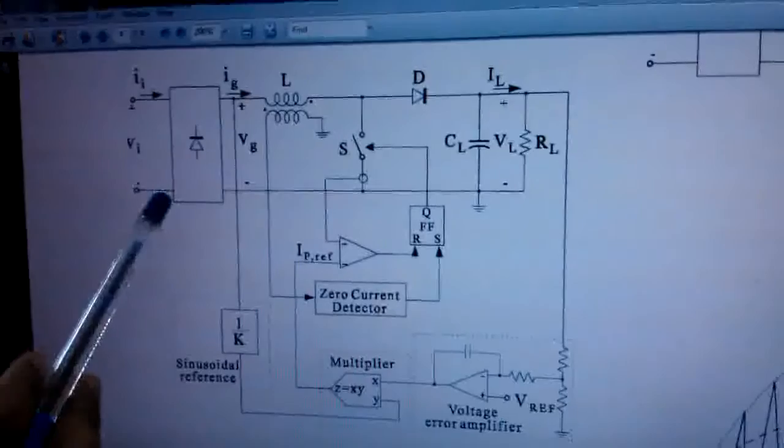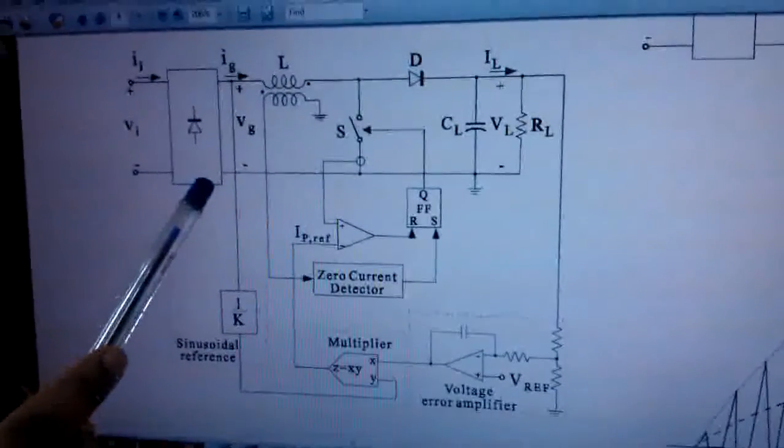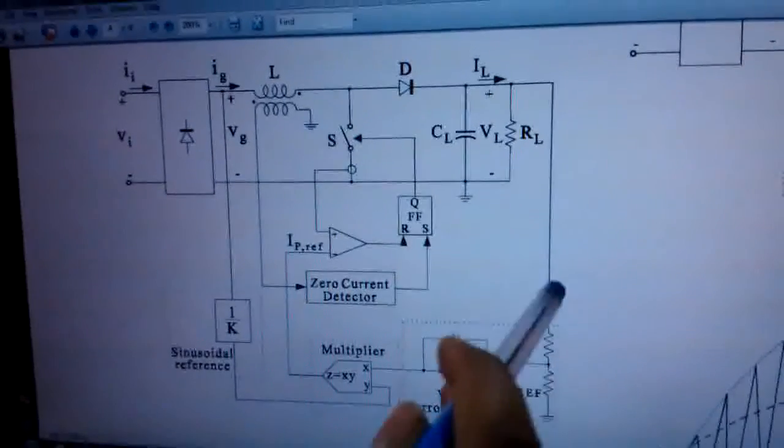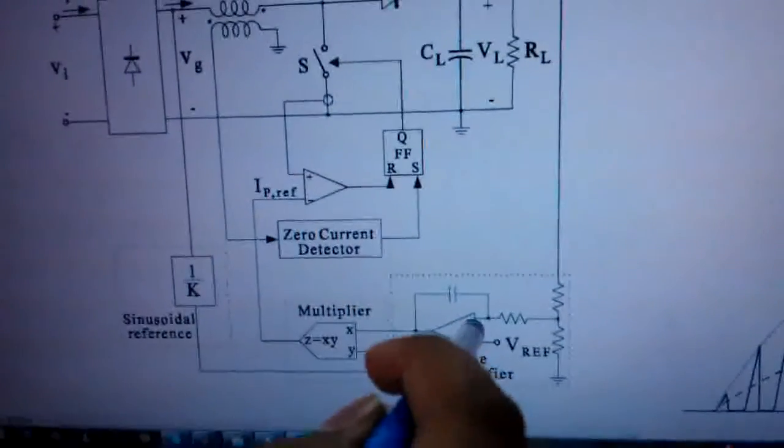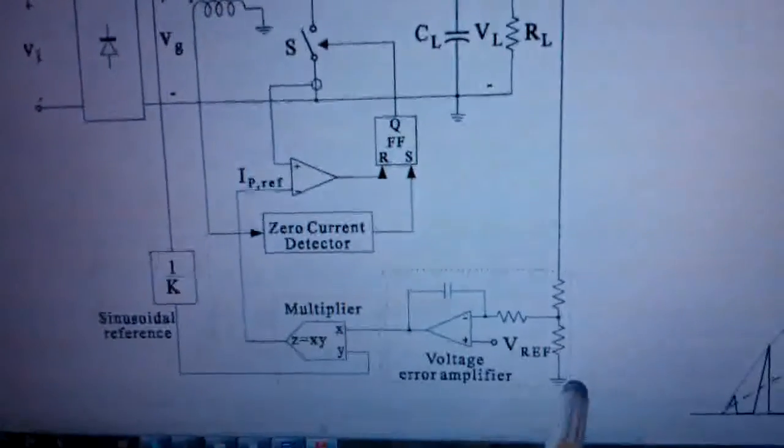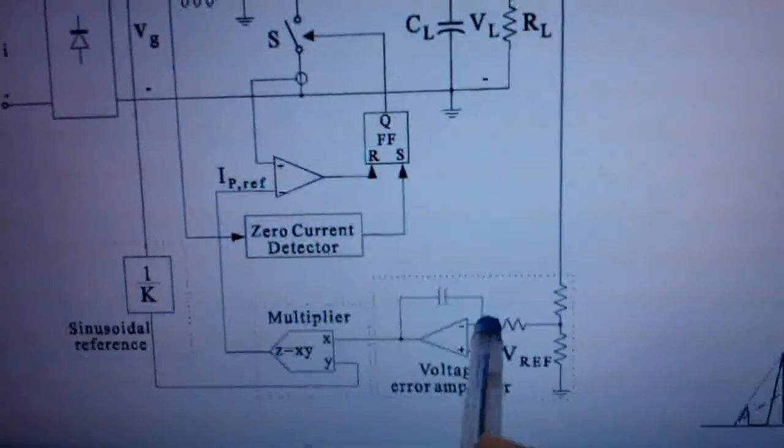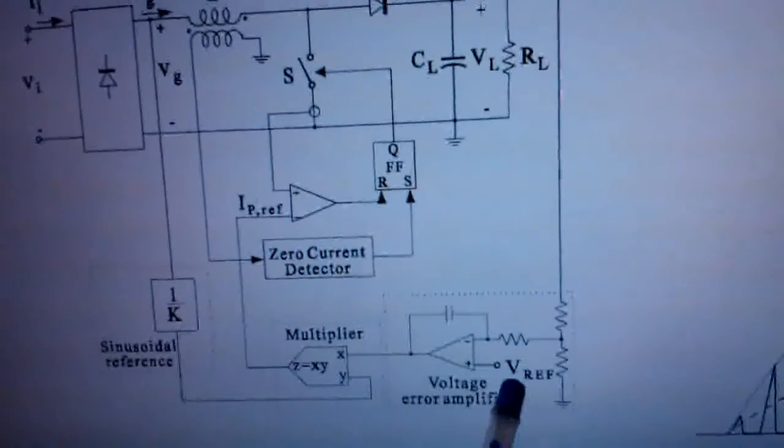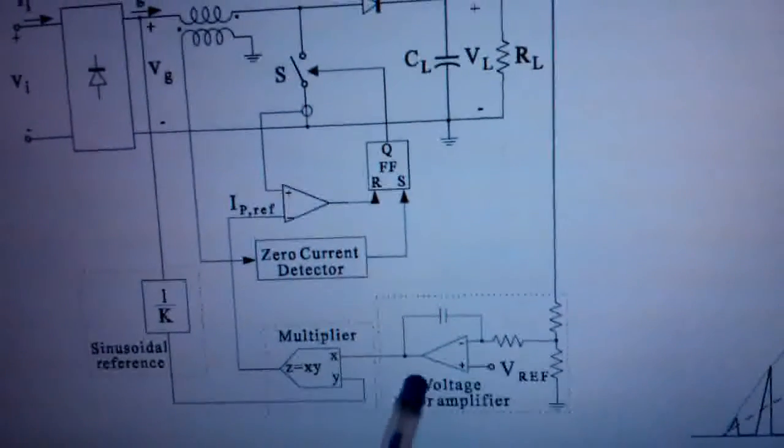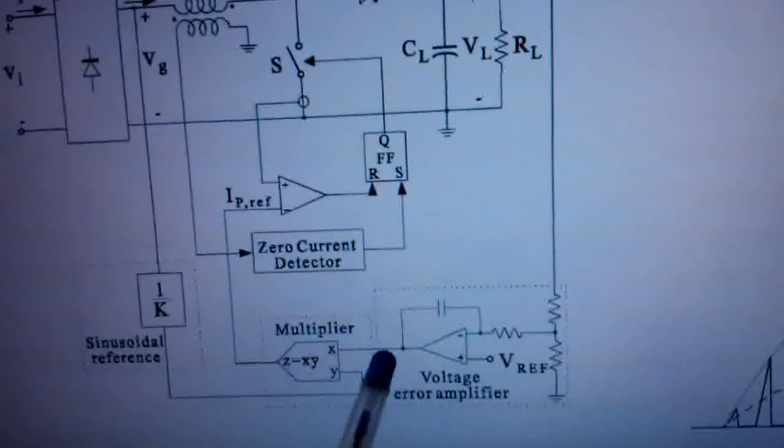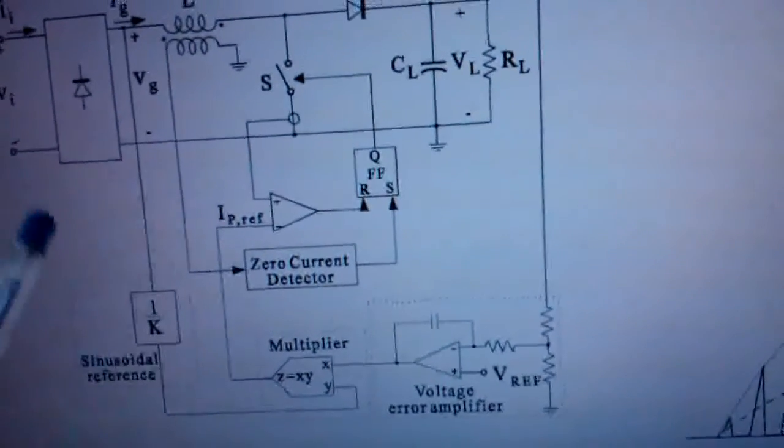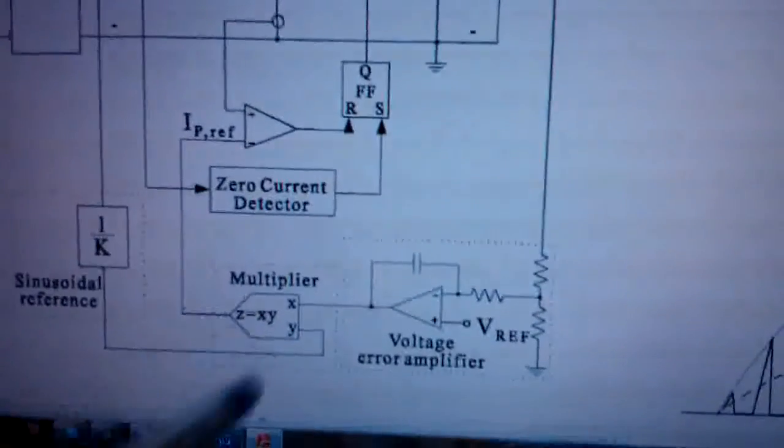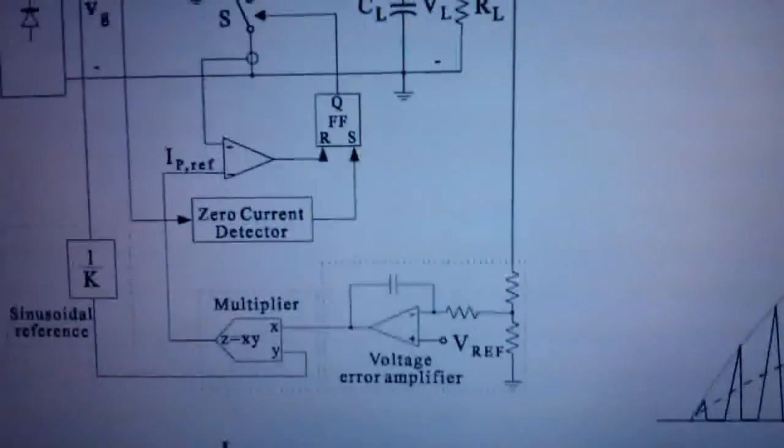This is the AC supply voltage given to the diode bridge rectifier. The output of the boost converter circuit is given to negative terminal of a voltage error amplifier via potential divider circuit. This signal is compared with a reference voltage which is predetermined. The output of this error amplifier is then multiplied with a rectified supply voltage, which sets the IP reference waveform.